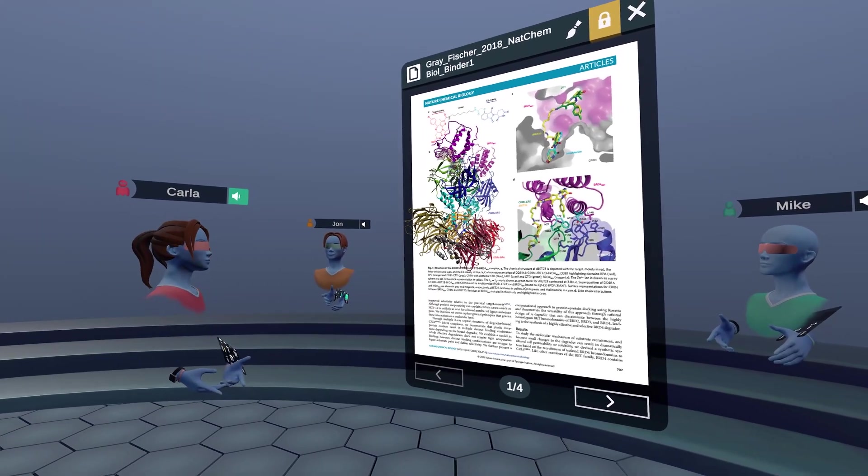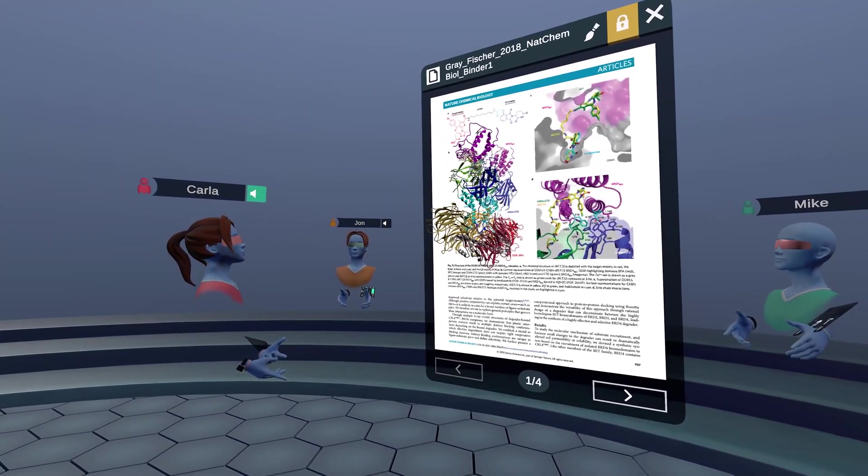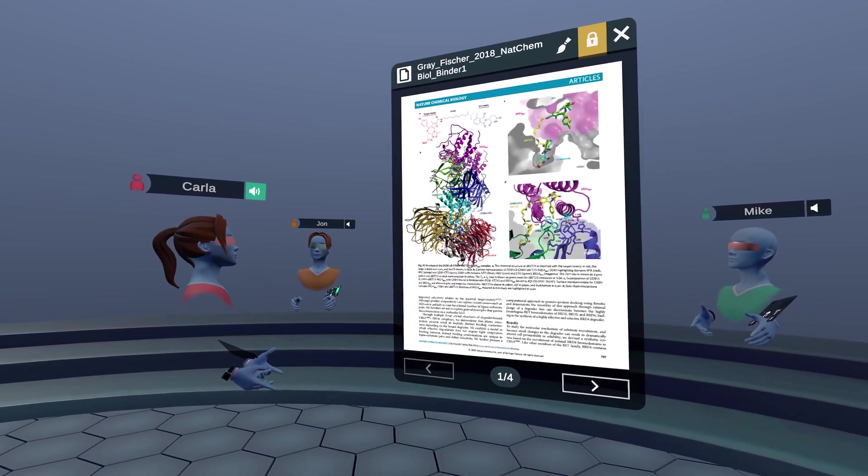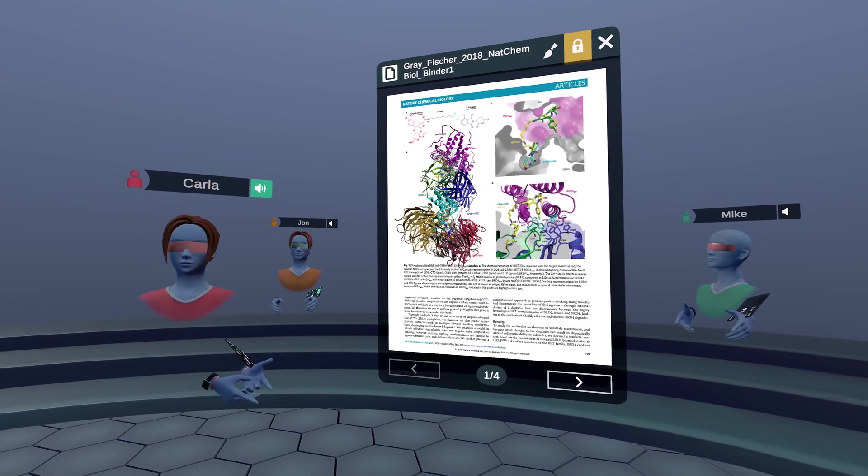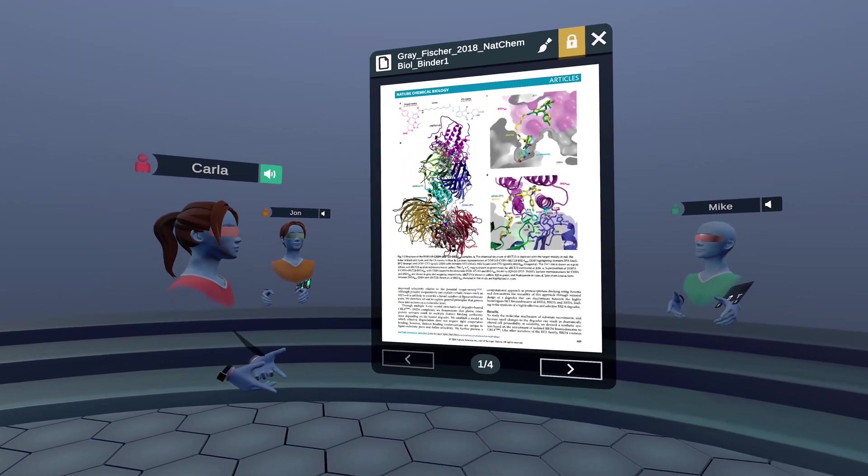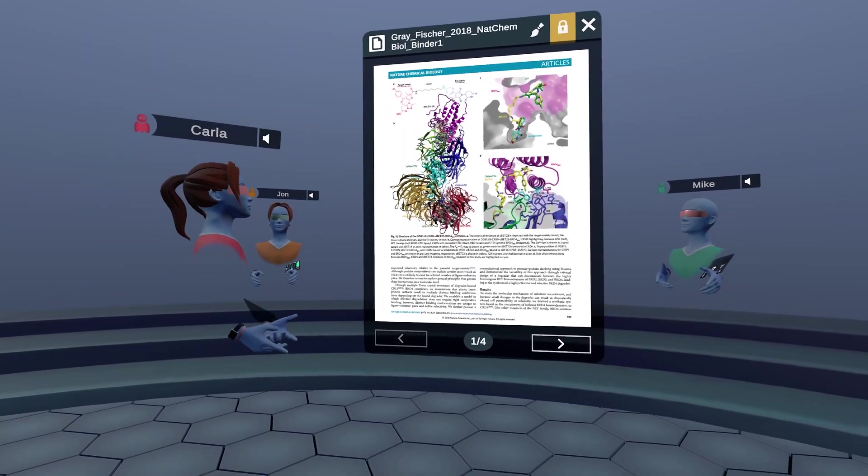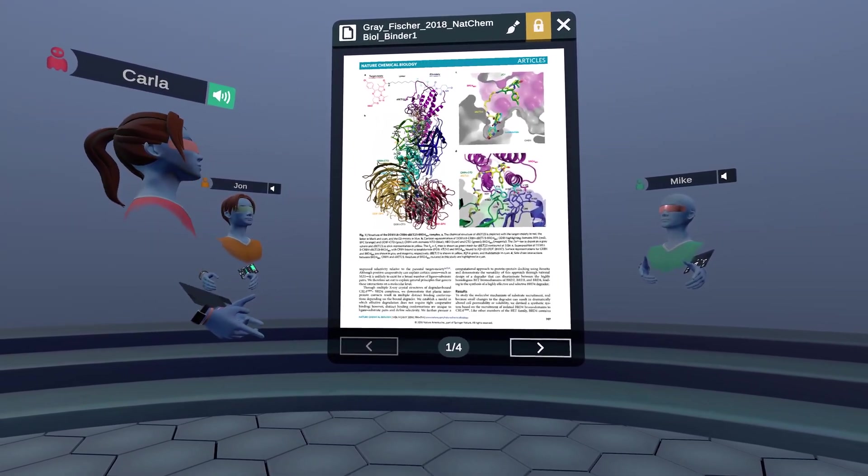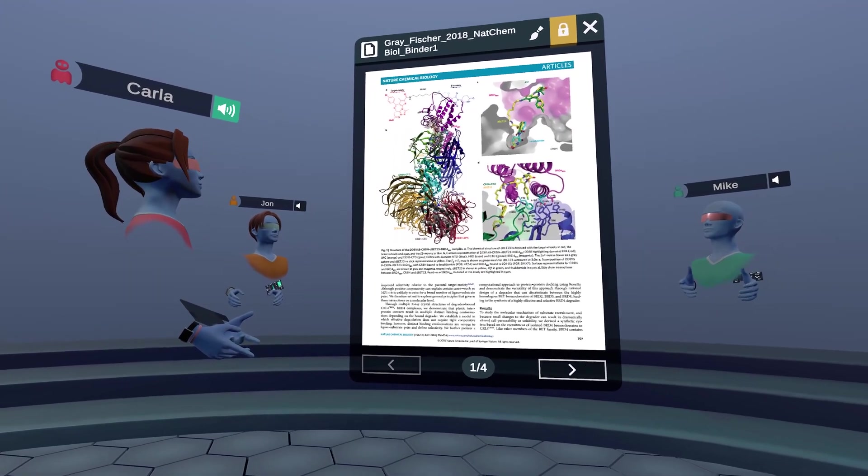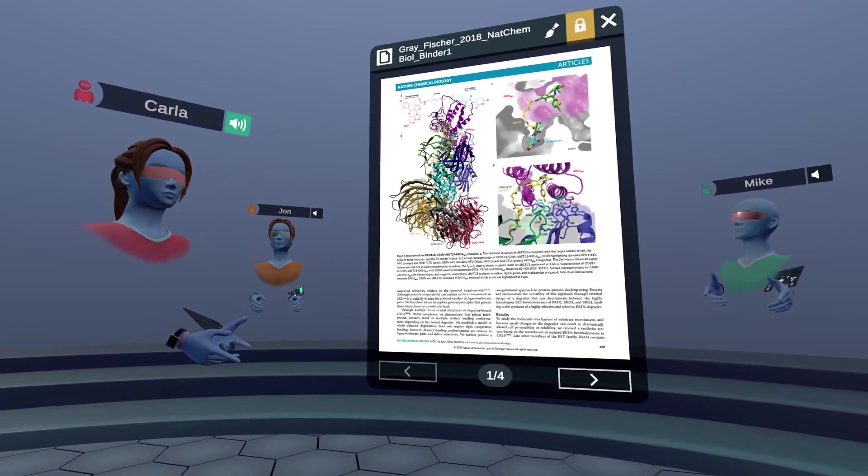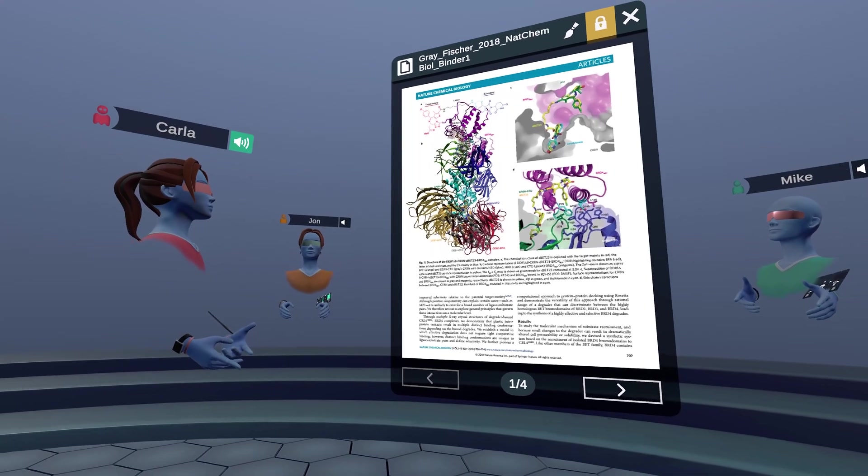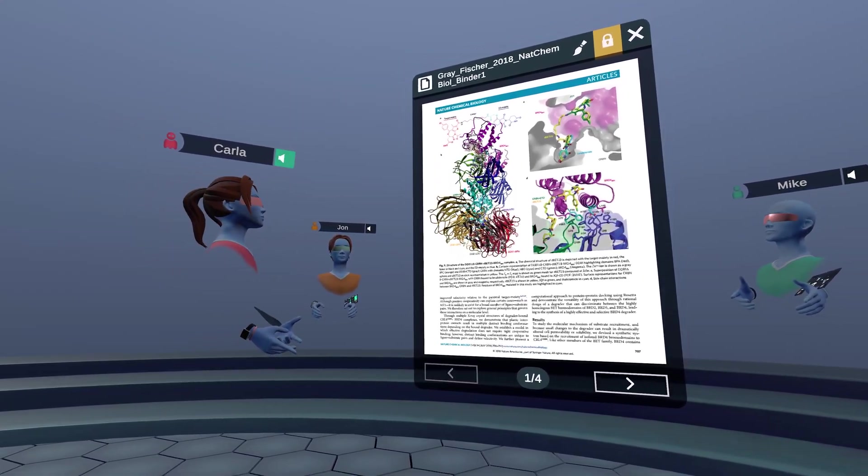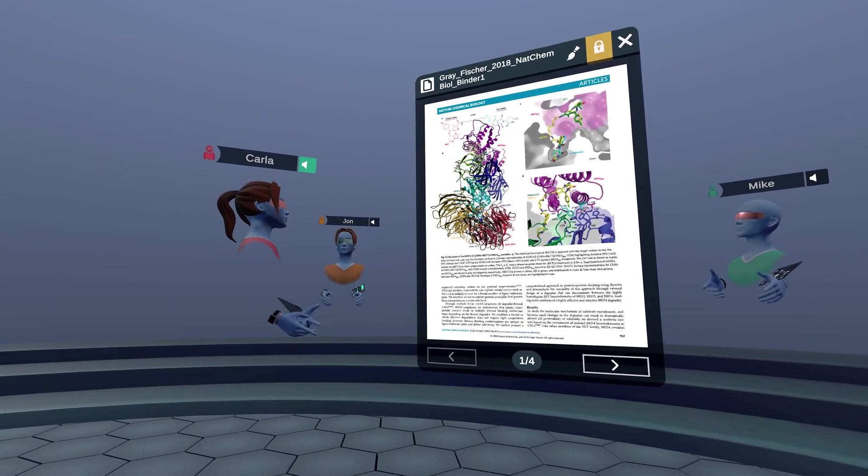So a little bit of background about bromodomains. They are approximately 110 amino acids long, and they consist of typically four alpha helices labeled alpha Z, B, and C, and two loops that join each of those helices, ZA and BC. And they recognize acetylated lysines on histones and help control the activation of transcription.